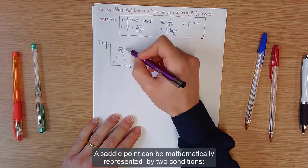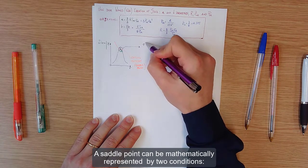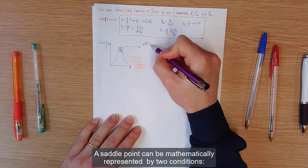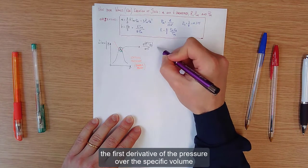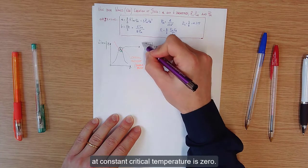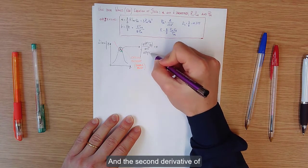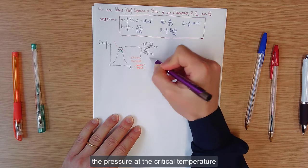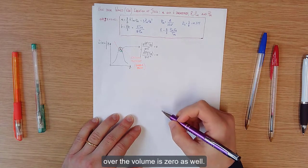A subtle point can be mathematically represented by two conditions. The first derivative of the pressure over the specific volume at constant critical temperature is zero. And the second derivative of the pressure over the volume is zero as well.